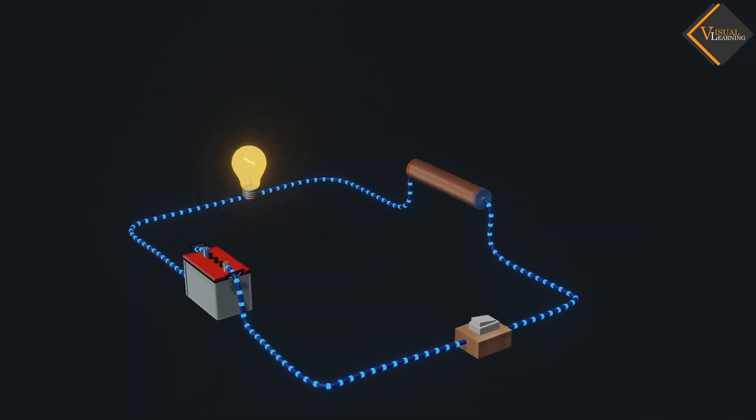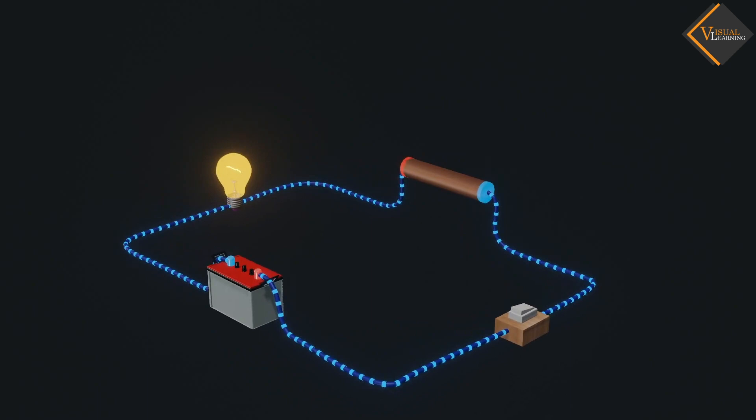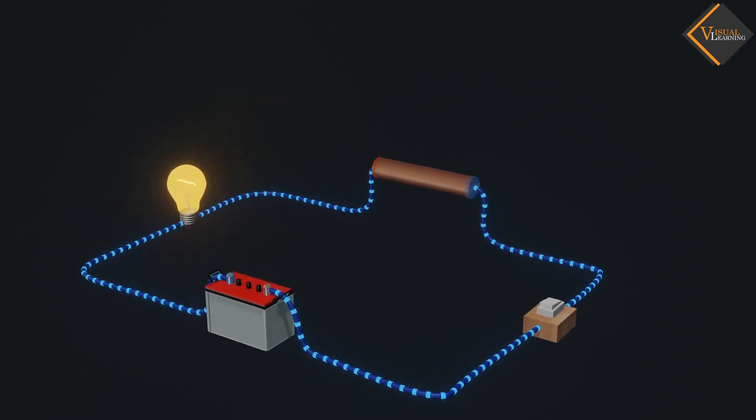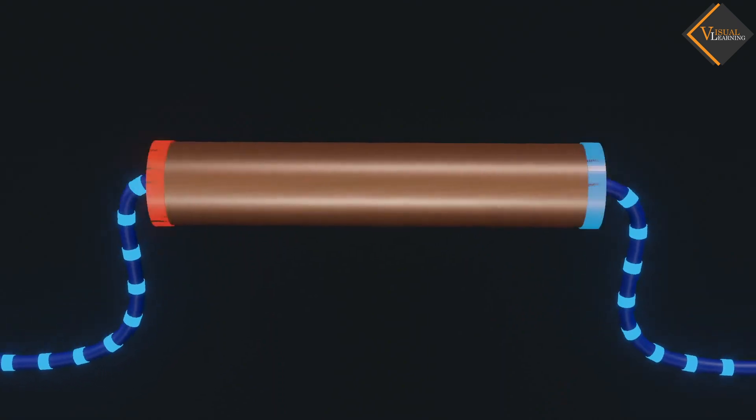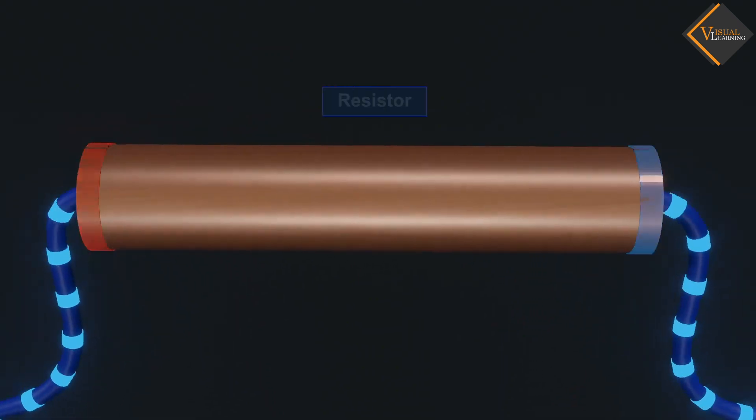In an electric circuit, every component offers resistance to the current. But an electric component which offers a specific value of resistance is considered as a resistor.